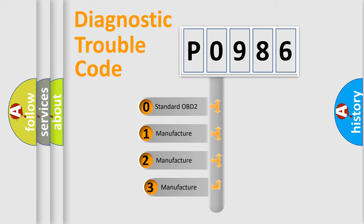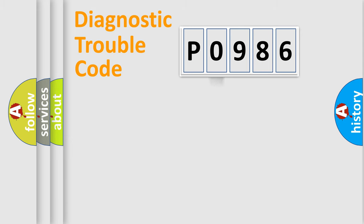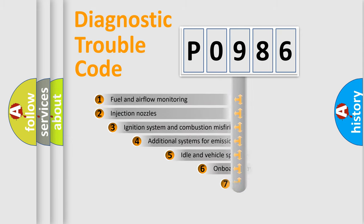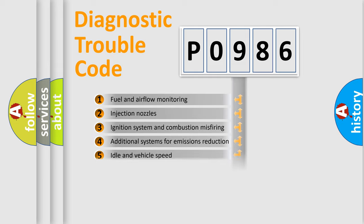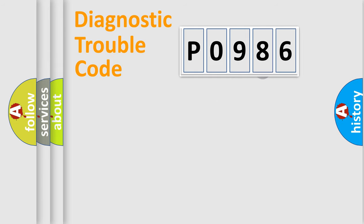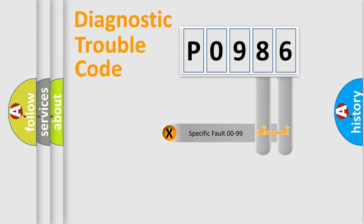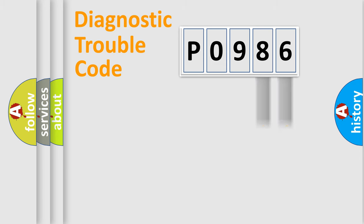If the second character is expressed as zero, it is a standardized error. In the case of numbers 1, 2, or 3, it is a manufacturer-specific error expression. The third character specifies a subset of errors. This distribution is valid only for the standardized DTC code, and only the last two characters define the specific fault of the group.